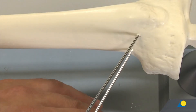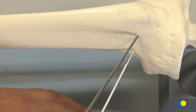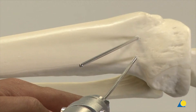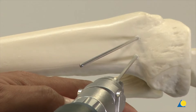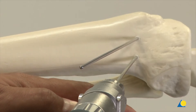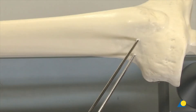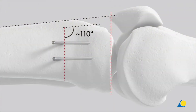The second wire is placed posterior and parallel to the first wire. To maintain the inclination of the tibial slope, the wires must run at the same angle towards the tibial plateau. To ensure good bony contact in the area of the ascending cut after opening the osteotomy, the ascending osteotomy cut is made parallel to the anterior cortex of the tibial shaft, at an angle of around 110 degrees to the transverse osteotomy cut.